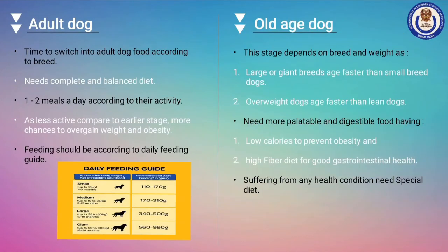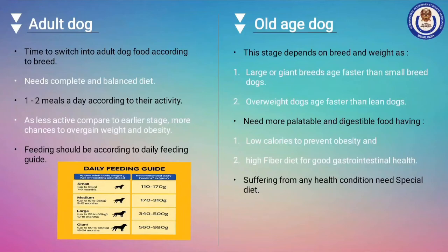Adult stage: Once a puppy has reached its adult weight in the required duration — not by overfeeding and gaining overweight — it's time to switch to adult dog food. In the market, varieties of food are present for specific breeds, particular breed sizes, and normal adult dogs. In this stage, they need a balanced diet plan and healthy lifestyle. Follow the feeding guide according to breed size and divide the meal into one or two parts according to the dog's activity to avoid obesity. Feeding guides are not all the same — they are made according to the amount of calories and nutrients present in their ingredients.